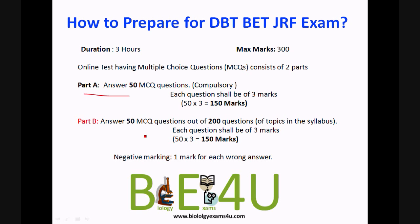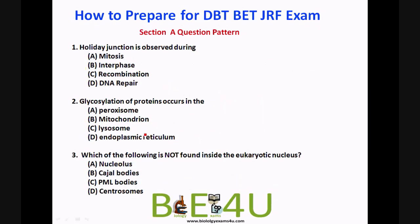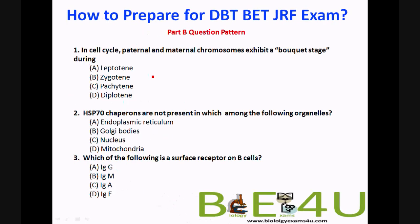Now let us look into some questions that appear in previous question papers of the DBT BET JRF exam. The first question: holiday junction resolution is observed during mitosis, interface recombination, or DNA repair. The answer, as you all know, is recombination.